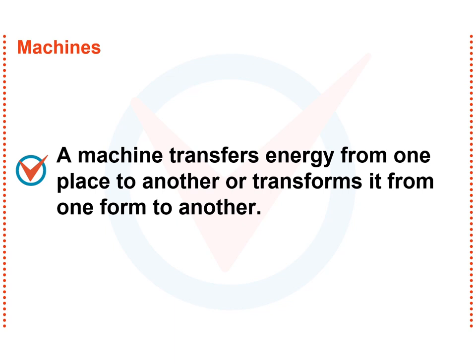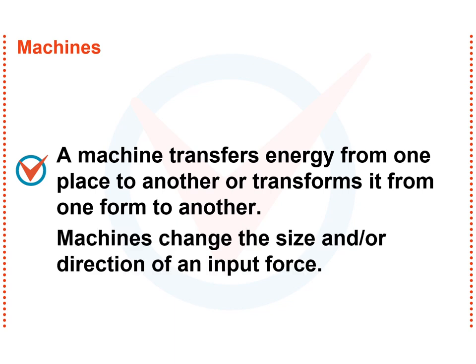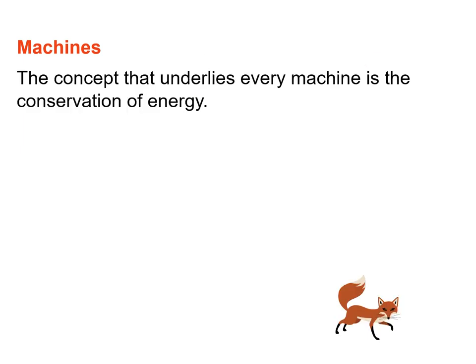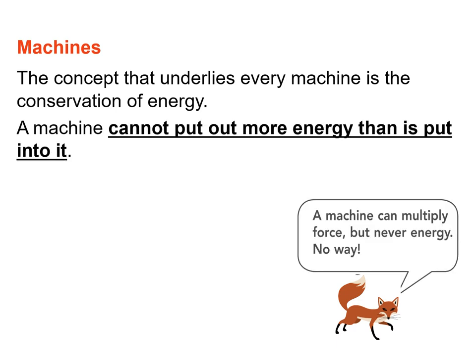So a machine such as the lever transfers energy from one place to another, or it can transform it from one form to another. In the case of simple machines like the lever, we can also say that the function of a machine is to change the size and or direction of an input force. Change either the size or the direction of an input force and you've got a machine. But the concept that underlies every machine is the conservation of energy. A machine cannot put out more energy than is put into it.